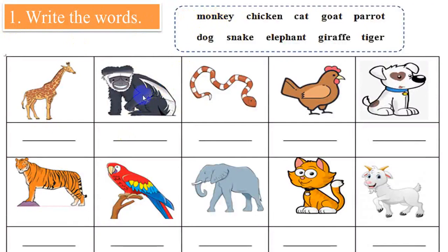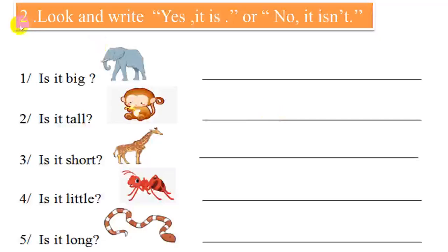Exercise 2: look and write 'Yes, it is' or 'No, it isn't.' One, is it big? Yes or no? The answer is 'Yes, it is.' You do two, three, four, and five.